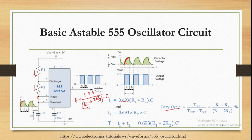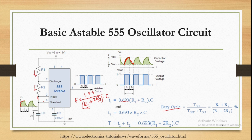At two-thirds Vcc the second comparator turns on and discharge happens through pin number 7. Pins 6 and 2 have the same potential, as discussed in a previous video. The T1 timing is given by 0.693 × (R1 + R2) × C.